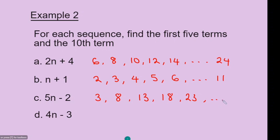Now to find the tenth term, n will be 10. So you go 5 times 10 is 50, minus 2 is 48.